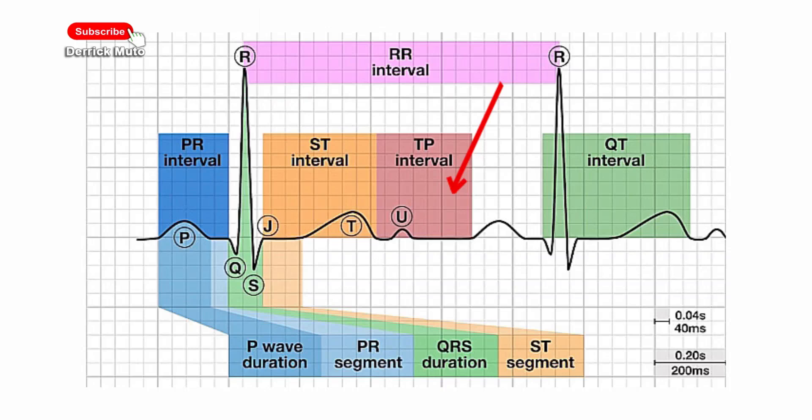The TP segment is identified from the end of the T wave to the beginning of the P wave, which is at the zero potential or the isoelectric point. The RR interval is the time lapse between two successive R waves of the QRS signal on the ECG. It normally lasts for about 0.6 to 1.2 seconds.